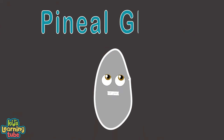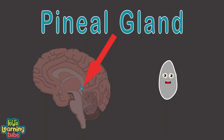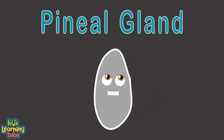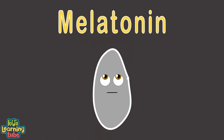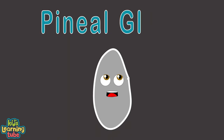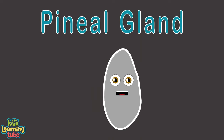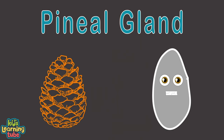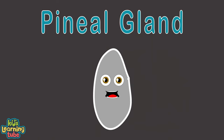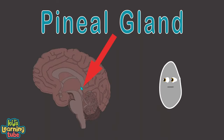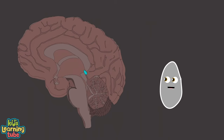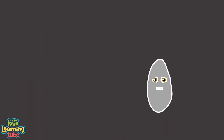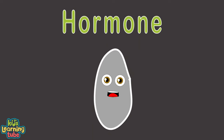I'm the pineal gland, located in the midline of your brain. A small endocrine gland, and now you know my name. I'm the pineal gland — a ductless gland that secretes a hormone called melatonin directly to the bloodstream. The pineal gland was given its name because it's shaped like a pine cone. You only have one of me inside your brain, sitting directly in the midline, secreting a hormone.